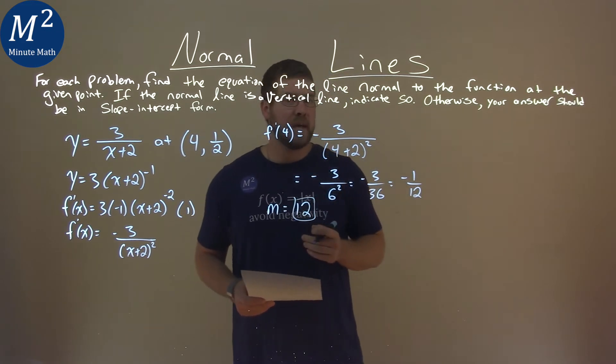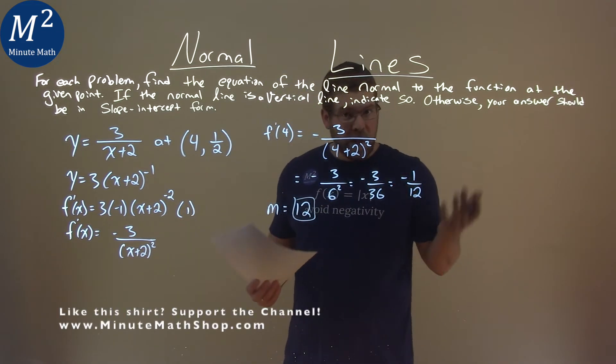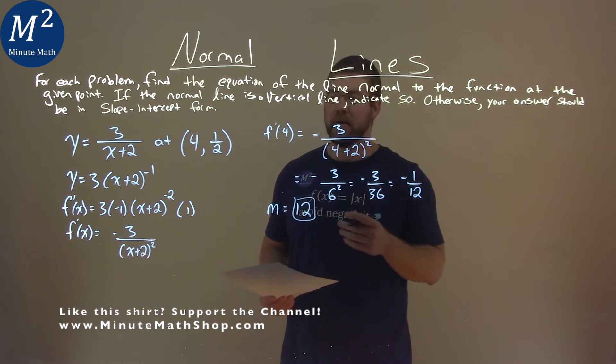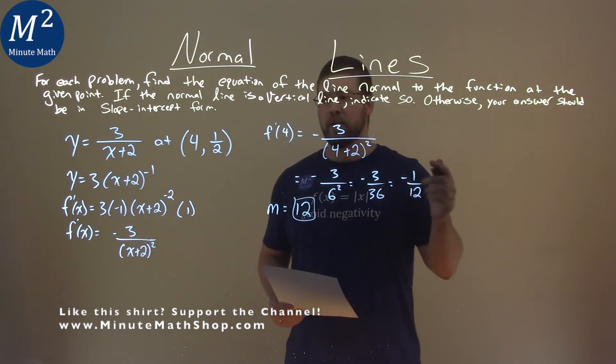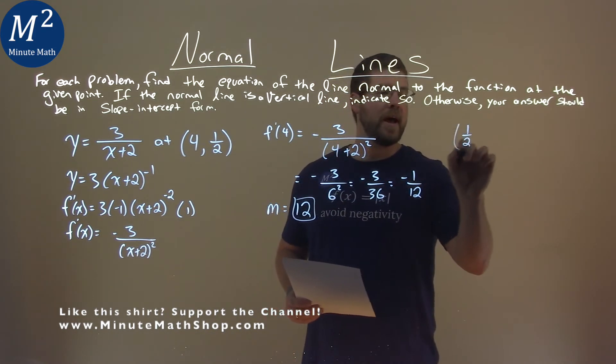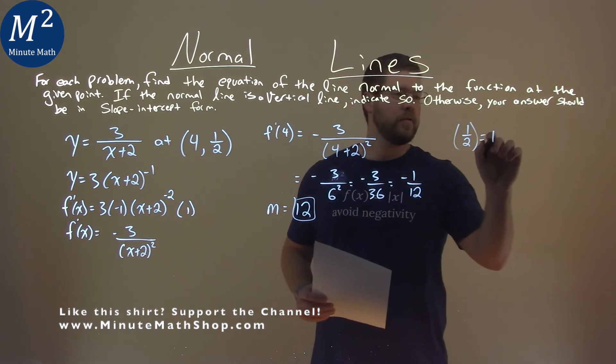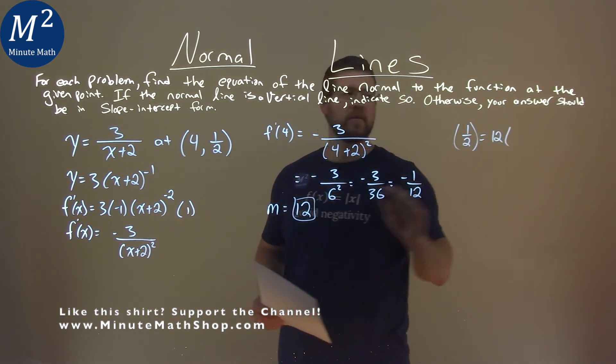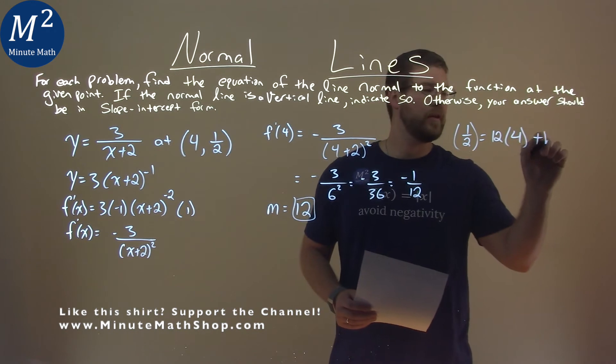So, with that being said, we need to use our algebra skills to find our b value, our y intercept. So, y equals mx plus b. Our y value is 1 half. Our slope is 12 times the x value is 4, and we plus b here.